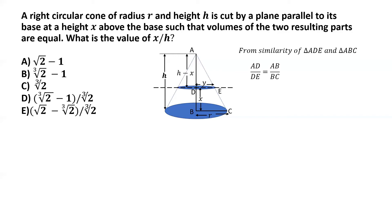The ratio of corresponding sides of similar triangles must be equal: AD by DE equals AB by BC. AD is h minus x, DE is y, AB is h, and BC is r. So h minus x by y equals h by r, which gives us h minus x by h equals y by r. This equation is highlighted in red for later reference.